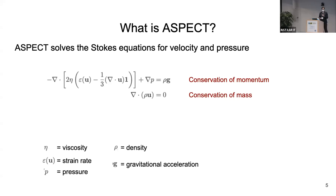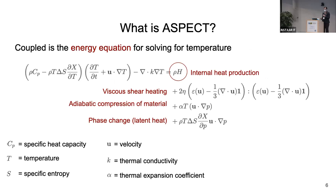ASPECT solves the Stokes equations for velocity and pressure — particularly conservation of momentum and conservation of mass. These are the compressible flow equations, though I'll show examples using the extended Boussinesq approximation. Coupled to the Stokes equations is the energy equation to solve for temperature.